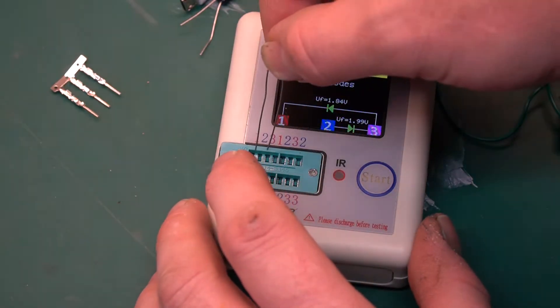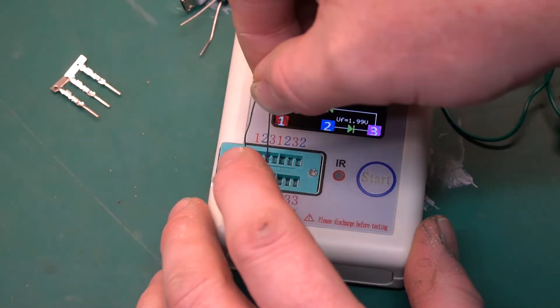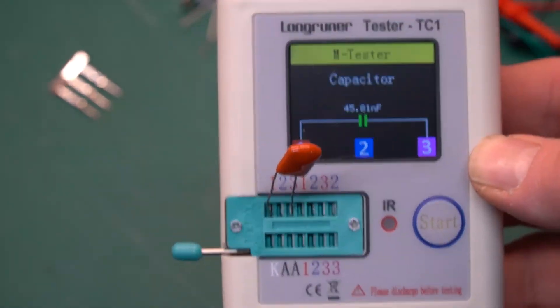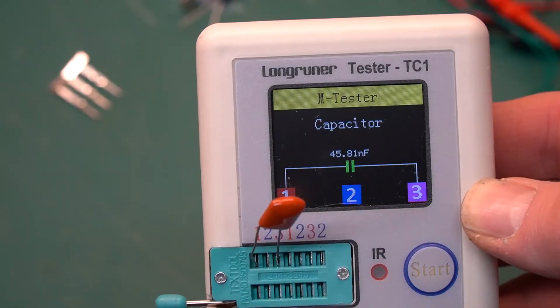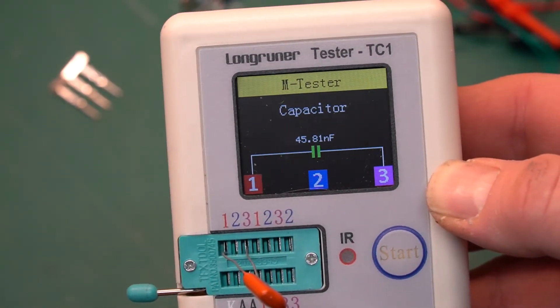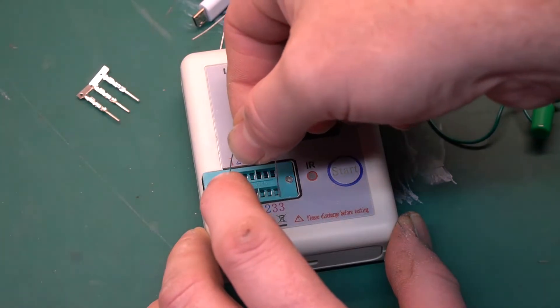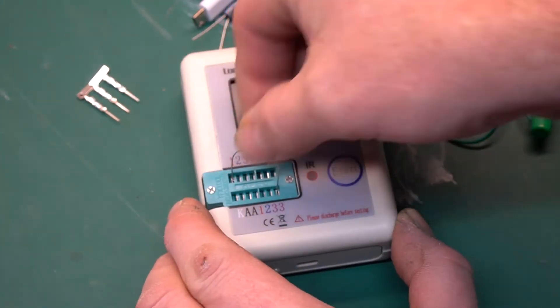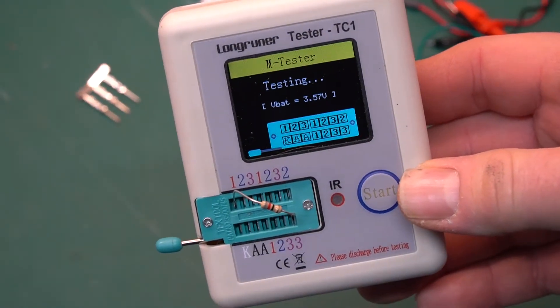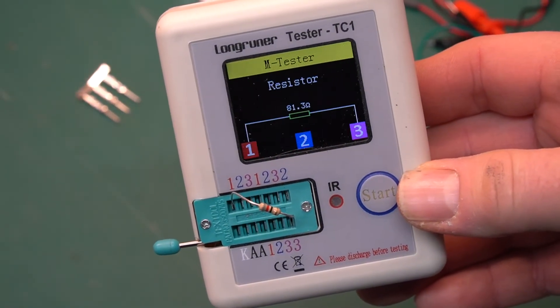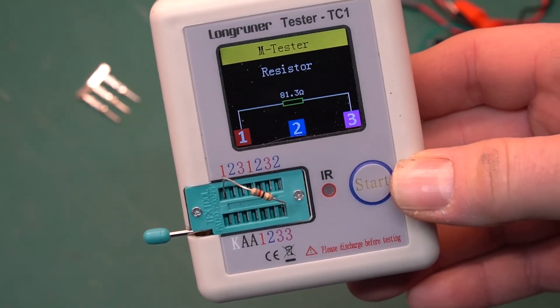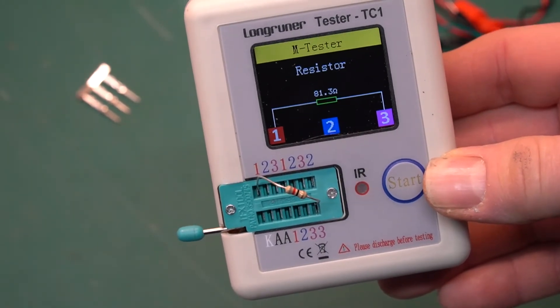Let's try a capacitor and see how well it does with that. So we're going to go across pins one and three, hit the test button, and there you go. It tells you the value of the capacitor and it knows it's connected to pins one and three. We're going to test a resistor using pins one and three. Lock it down, hit the test button, and the value of that resistor is 81.3 ohms. That's a whole lot easier than reading the bands when you have old eyes like me, huh?